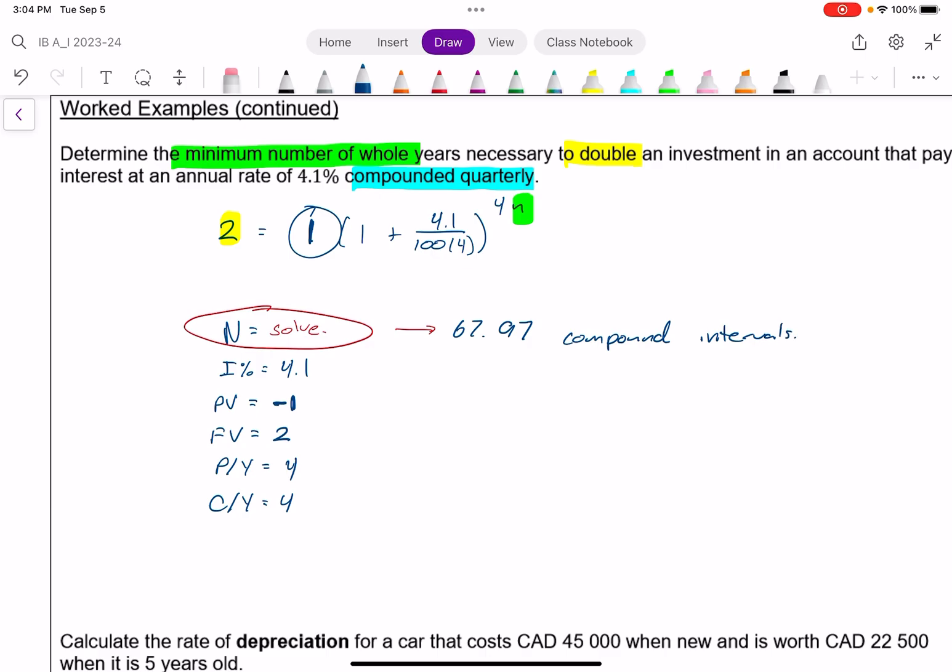Okay, what does that mean? Well, remember, we compound four times a year. So this is not 67 months or 67 years. This is 67.97 quarters of years. And so this is essentially 68 compounding intervals. And if I divide by four, we get exactly 17 years. Because remember, we are compounding four times a year. And that's the answer we really want. And that matches up with what I saw in desmos there.